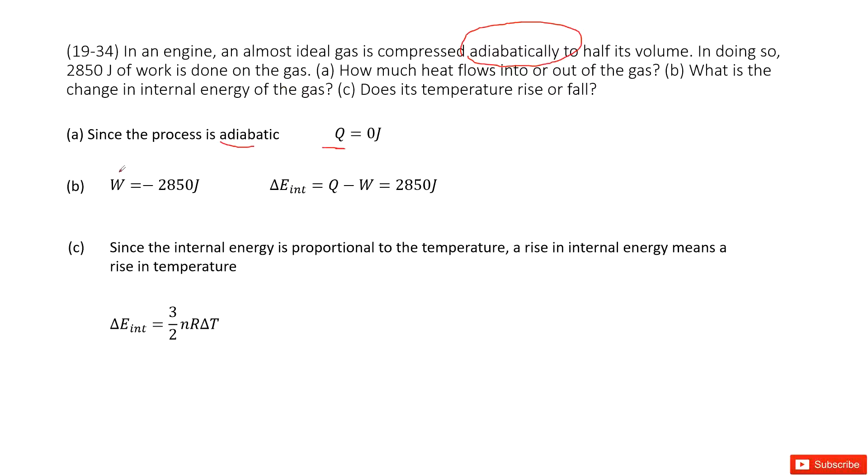In this one we can see the work on this gas is negative 2850 joules. Why is there a negative sign? Because the work is done on the gas, right? The work is put into the gas, so there is a negative sign.